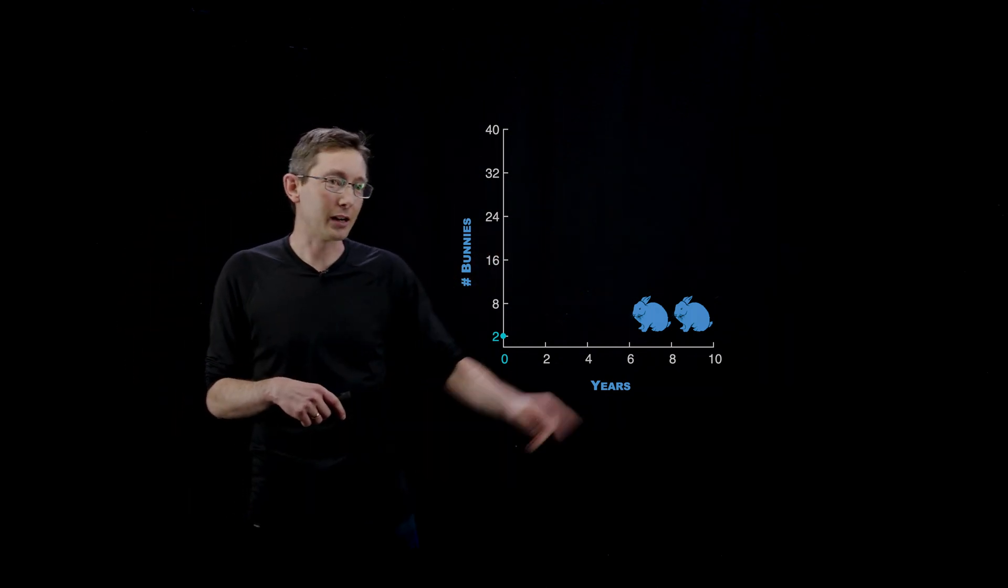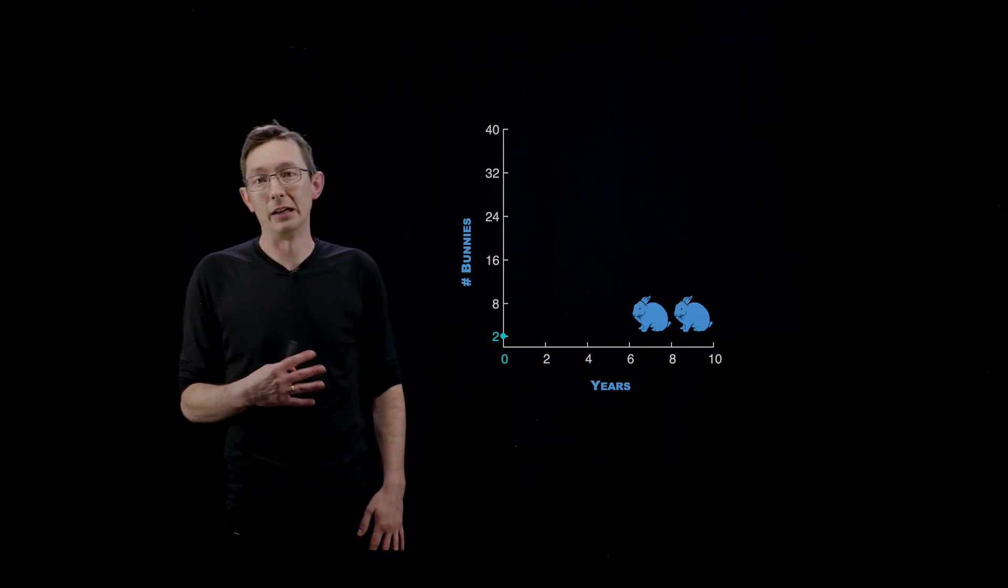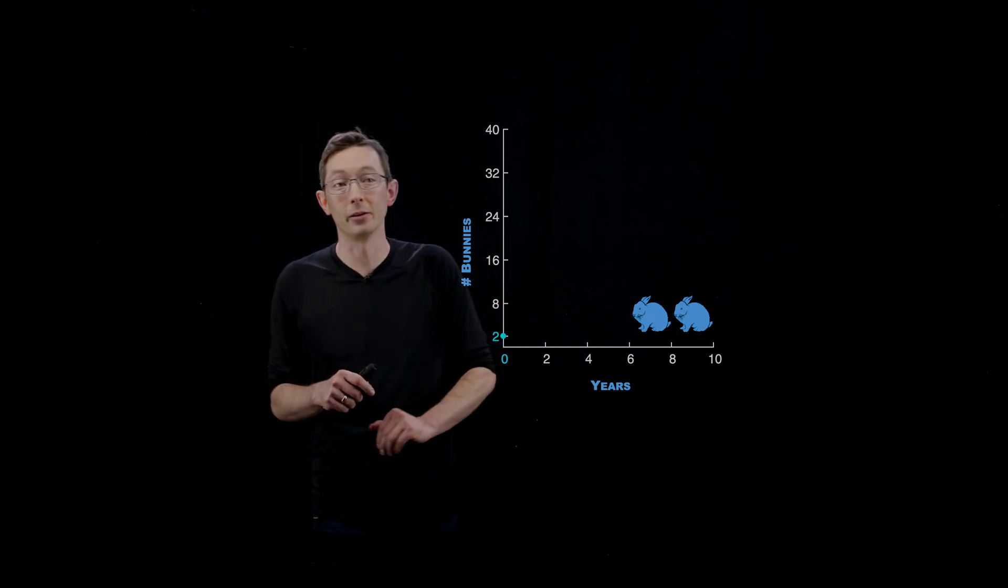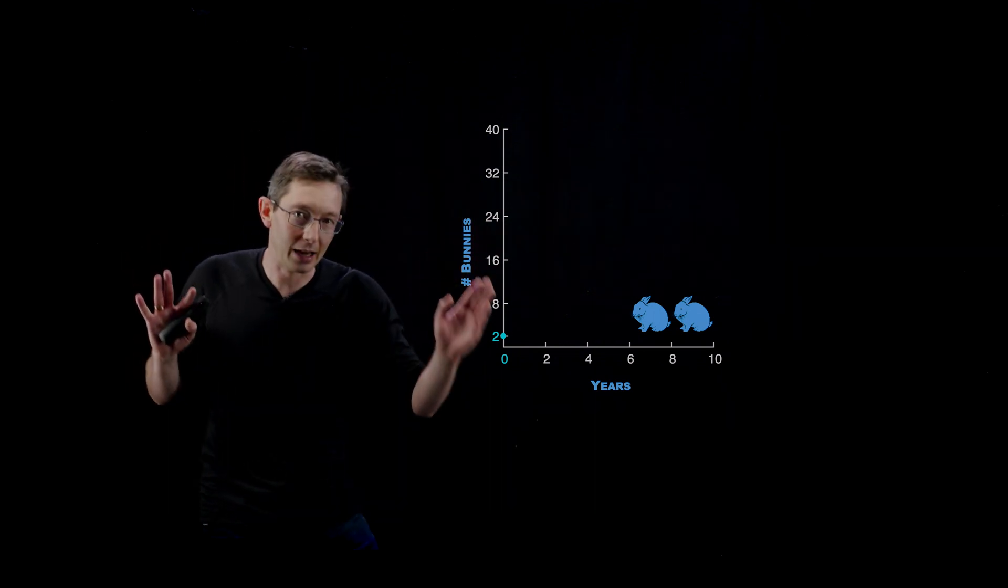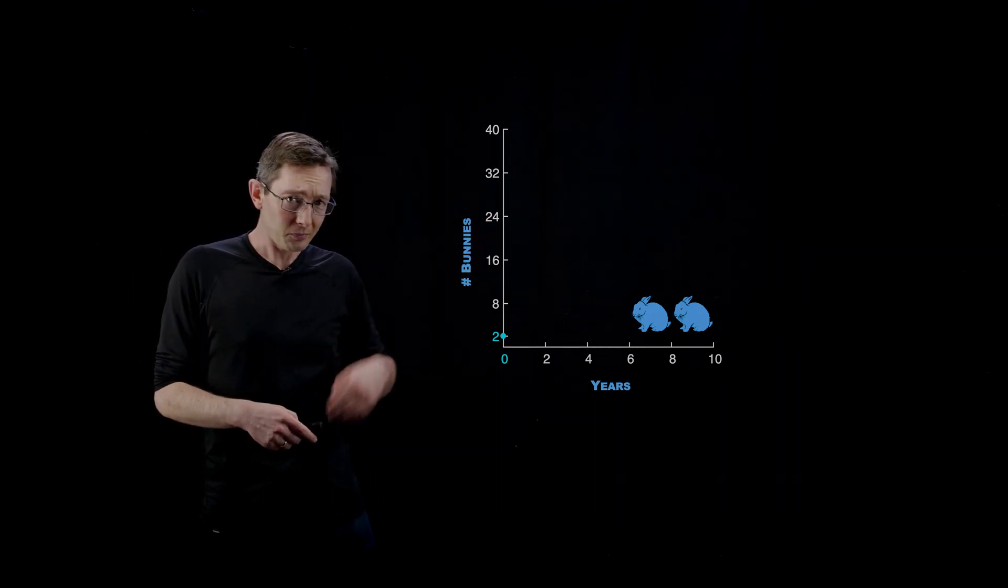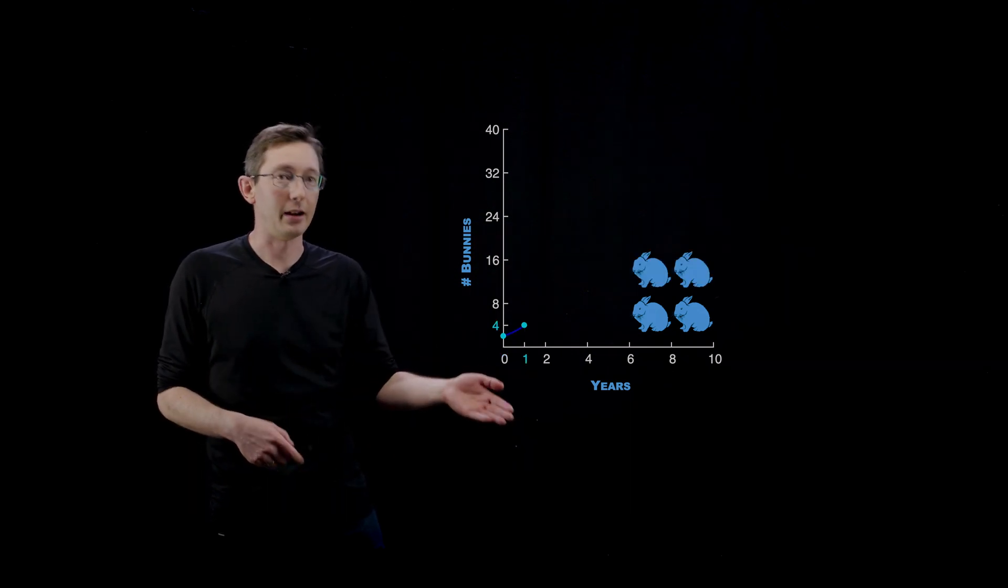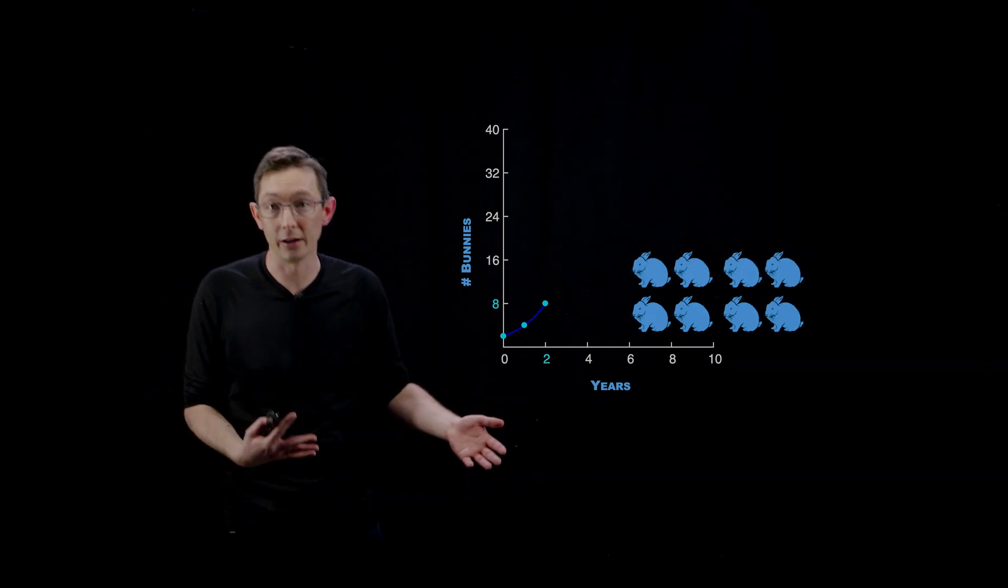If I start out with an initial population of bunnies, let's say two bunnies, don't worry about any moral implications of only starting with two bunnies. So if I start out with two bunnies and we assume that they double every year, then after one year I have four bunnies. After two years I have eight.